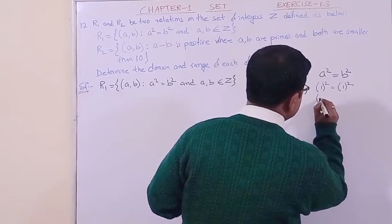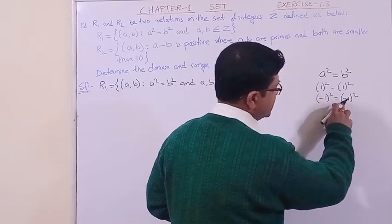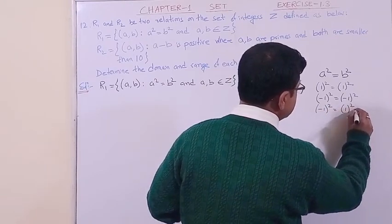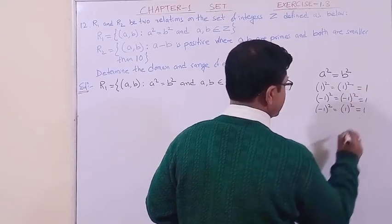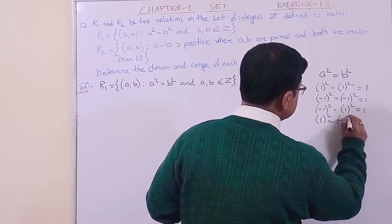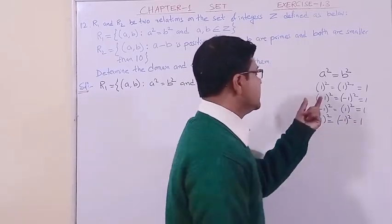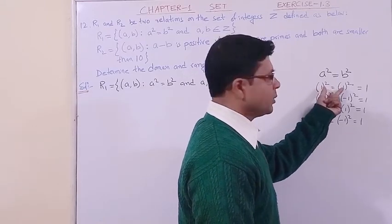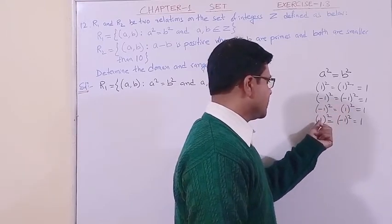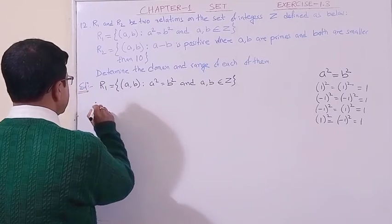Notice that it is not only equal values that satisfy this — their squares just need to be equal. For example, (-1)² = (-1)² = 1, and (-1)² = (1)² = 1. So both (1, -1) and (-1, 1) satisfy the condition. In the pairs, a and b can be: both positive, both negative, first negative and second positive, or first positive and second negative.